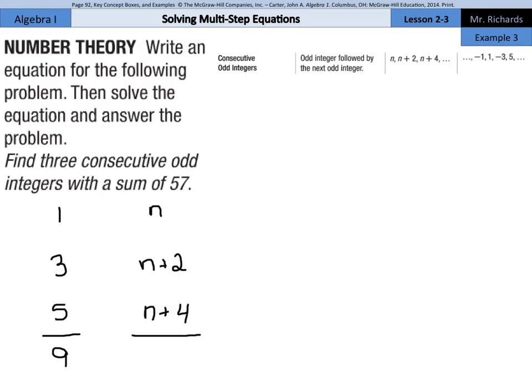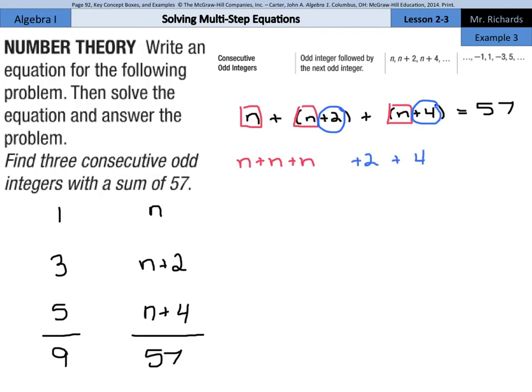Now, we're looking for a sum of 57. And so if we were to write this as an equation, n plus n plus 2 plus n plus 4 and set that equal to 57, we have now written the equation that we can solve. How are we going to solve this is the next piece. Combine like terms on the left side of the equation. We have n plus n plus n. I also have this plus 2 and plus 4. And these are all going to be equal to 57.